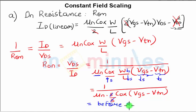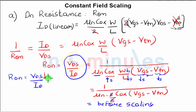You could have easily gotten the same result from Vds/ID, because Ron is Vds/ID. We know Vds is reduced by a factor of S in constant field scaling, and ID is also reduced by a factor of S, which gives Vds/S · S/ID where S cancels. So the ON resistance before scaling equals the channel resistance after scaling—it's exactly the same.